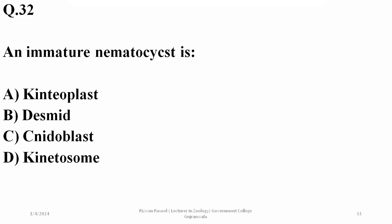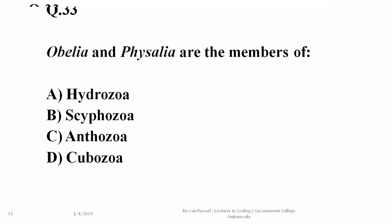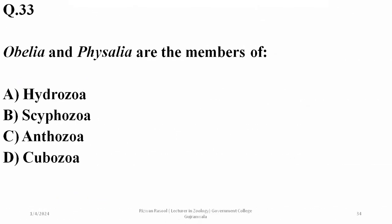An immature nematocyst is basically a nidoblast, so C is correct. Obelia and Physalia are members of class Hydrozoa, and some jellyfishes are members of class Scyphozoa — so A is the right option.